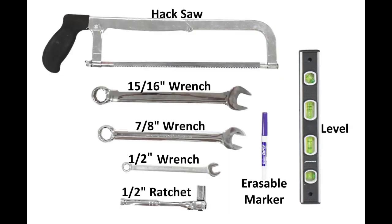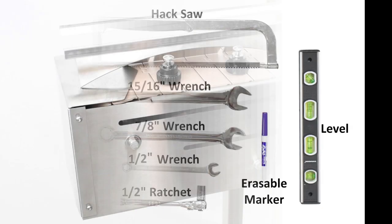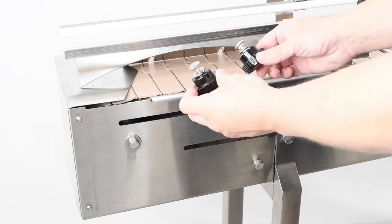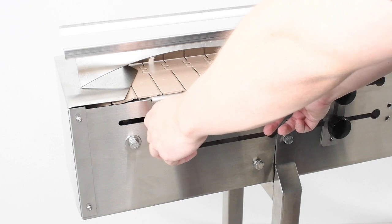Shown here are the tools you will need for setup. Once your accumulation table has been unpacked, we will attach the transfer plate to the slot at the start of your conveyor. Slide the knobs attached to carriage bolts into the slot.